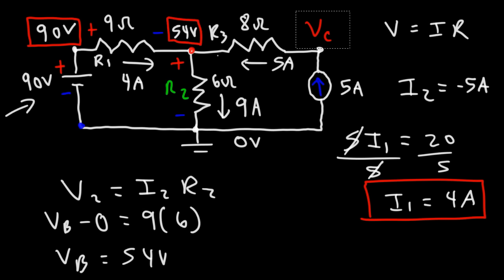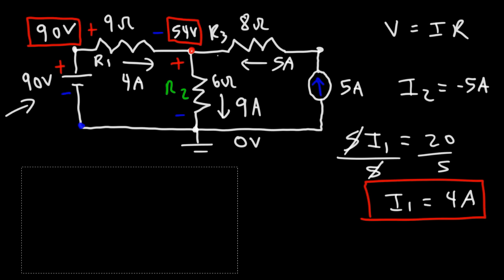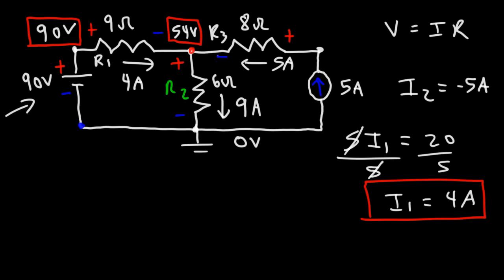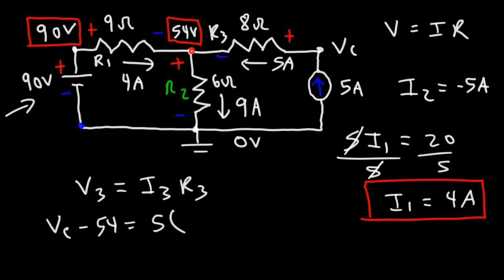For point C: current flows from a high electric potential to a low potential, so the potential at C is higher than at B. Using V equals IR: V3 equals I3 times R3. The voltage across resistor 3 is the difference between the potential at C and the potential at B, which is 54 volts. I3 is 5 amps and R3 is 8 ohms, so 5 times 8 is 40. Adding 54 to both sides, the potential at point C is 94 volts.